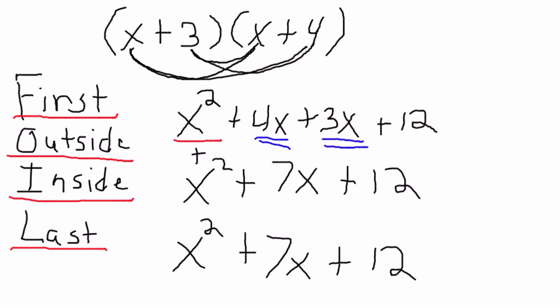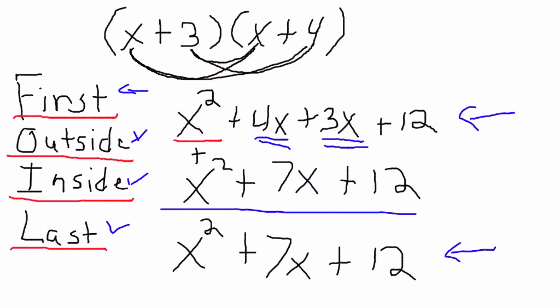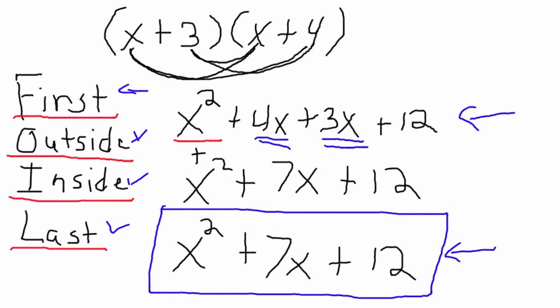And this is how we do FOIL. First, we multiply the numbers that are in the beginning of the parentheses using the F, which means First. Then we do the outside numbers, the inside numbers, and the last numbers. And that is how we get this expression. From here, we combine like terms. And once we add the x's, our final result is going to be x squared plus 7x plus 12. And that is how we do FOIL.